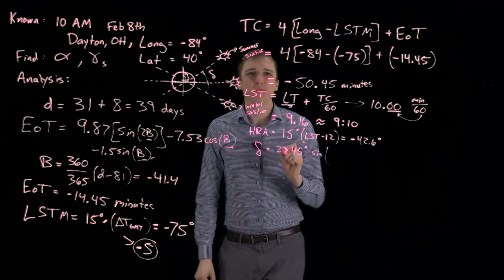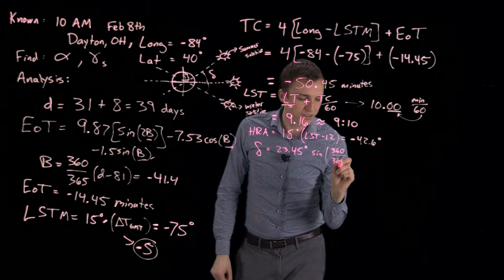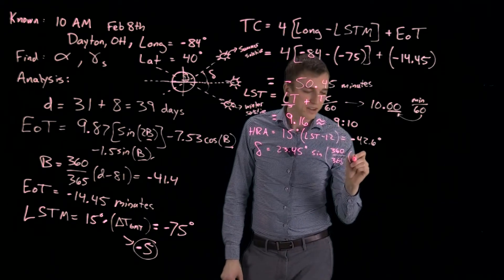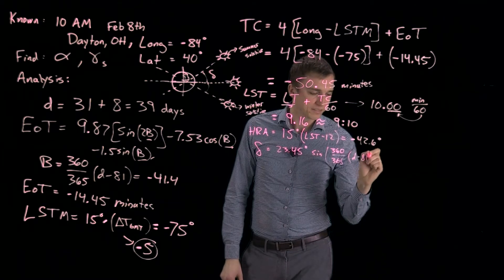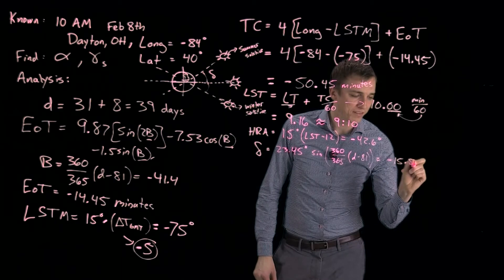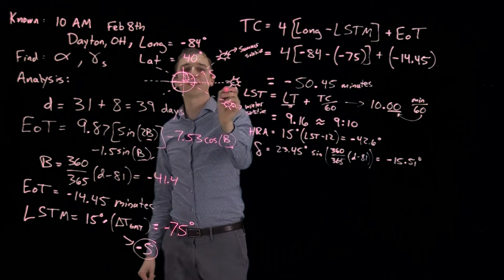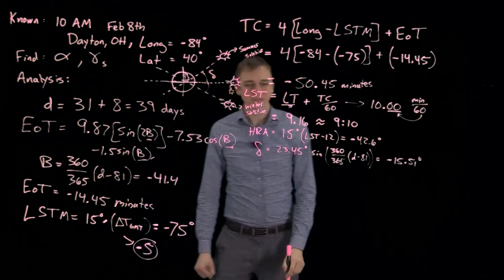And you multiply that by the sine of 360 over 365 times D minus 81. Okay, and that is minus 15.51 degrees. So the sun is currently about here, which makes sense. It's winter and we're up here.